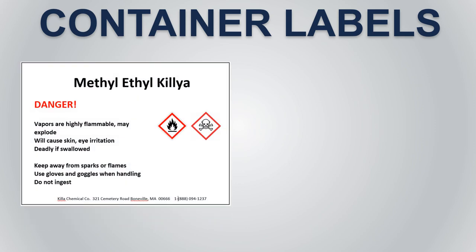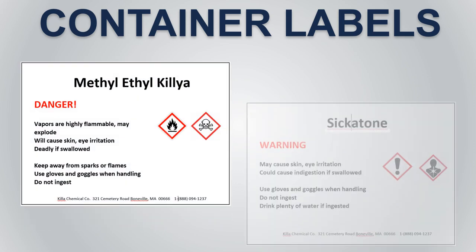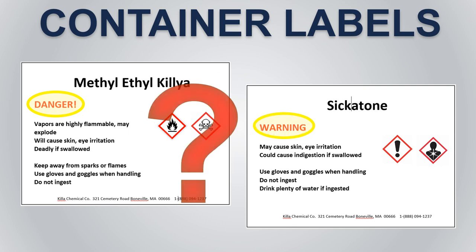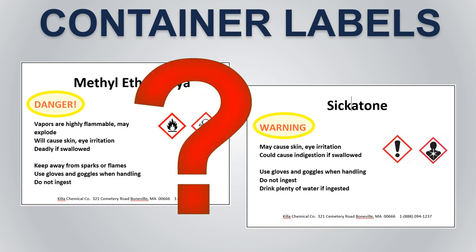Container labels are an employee's first line of defense when it comes to understanding chemicals you are working with and how they can cause you harm. So why do some containers state danger on the label while other containers state warning? Do they basically mean the same thing or are they different?